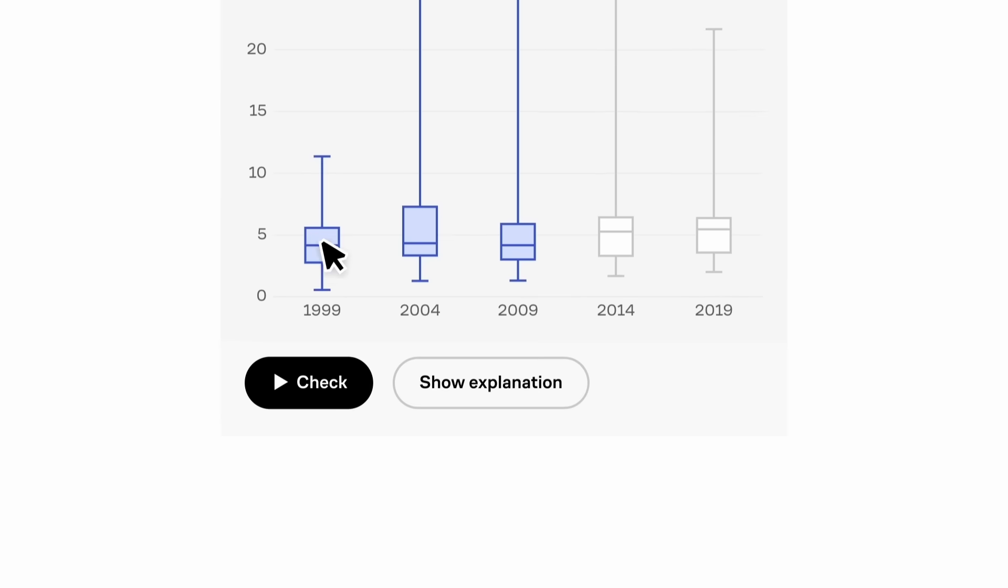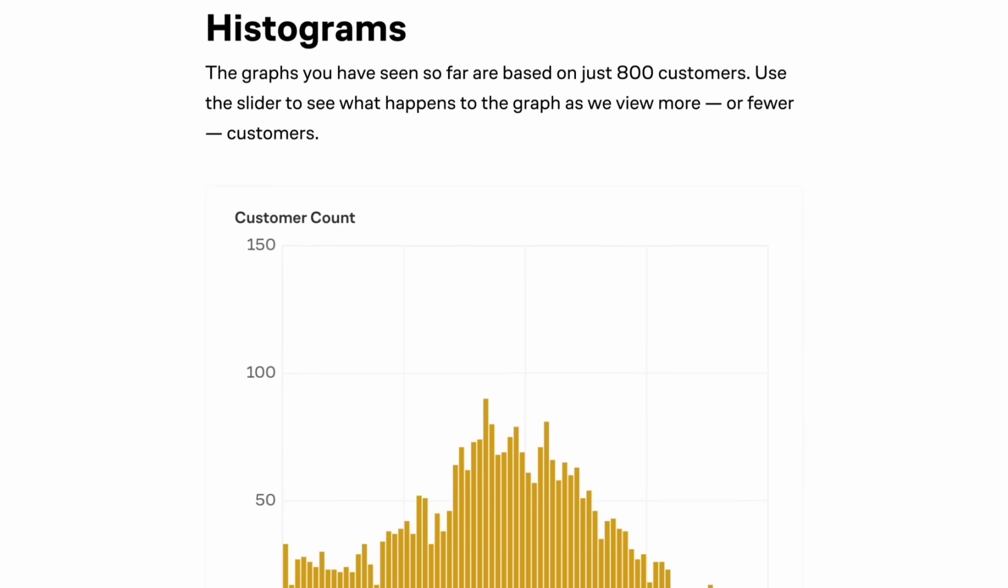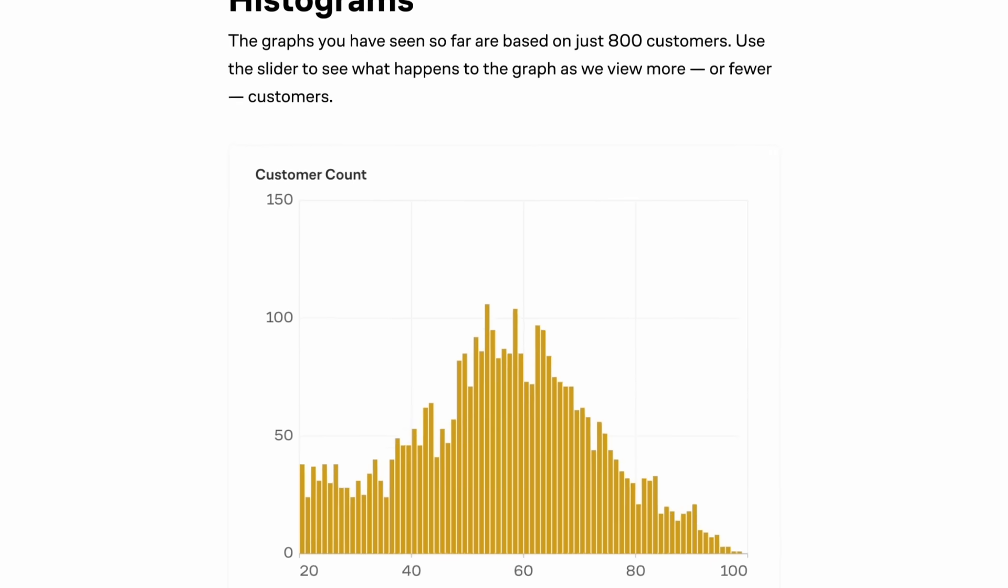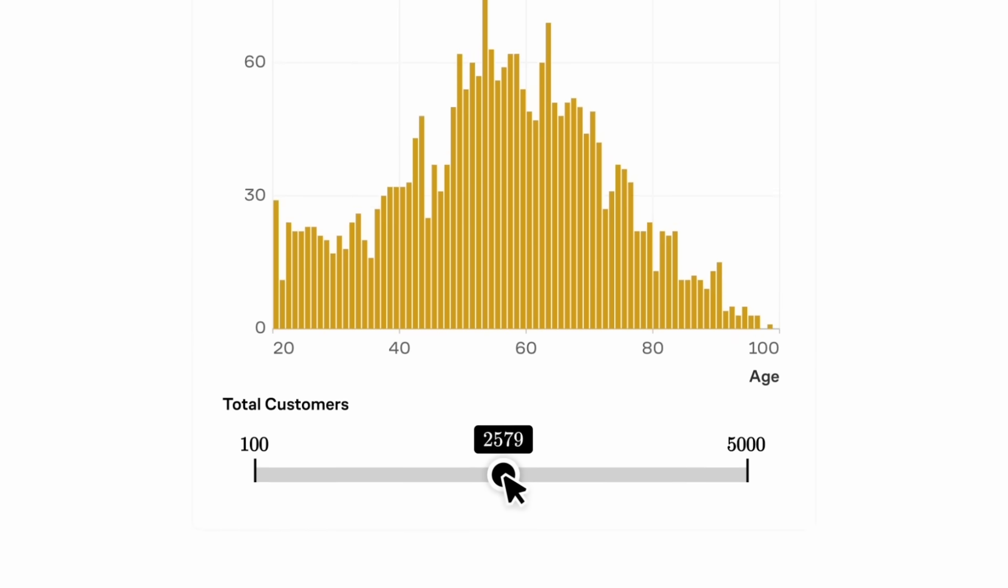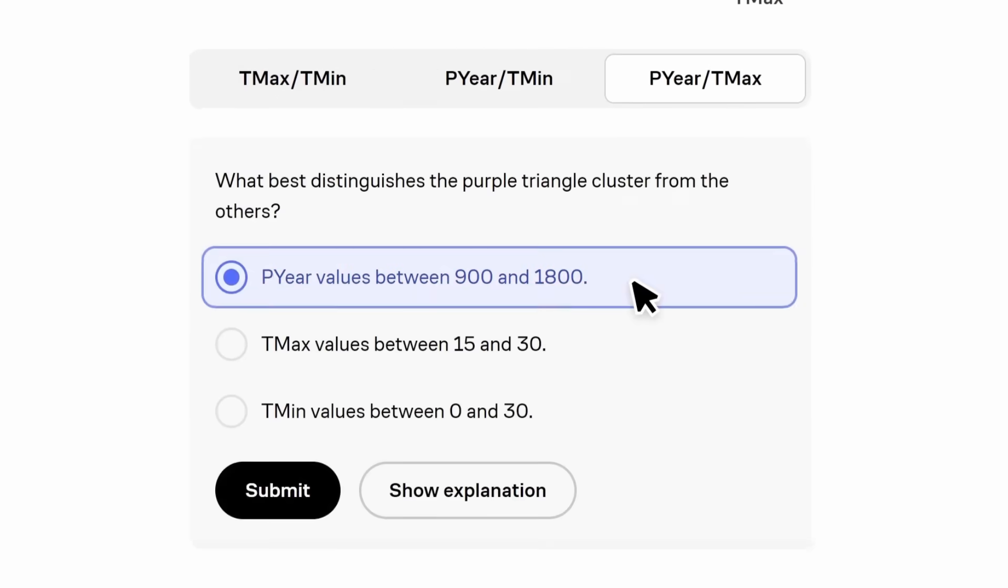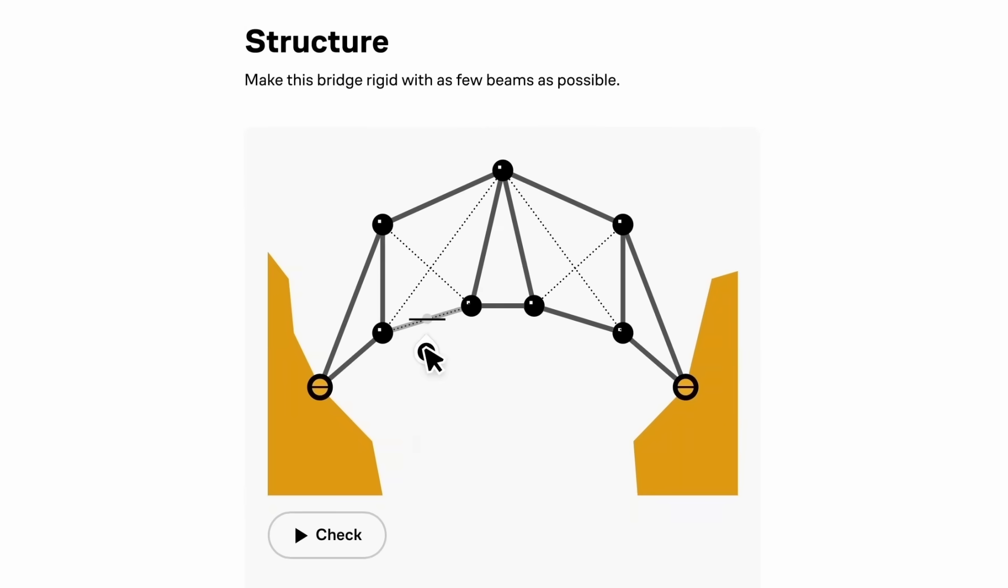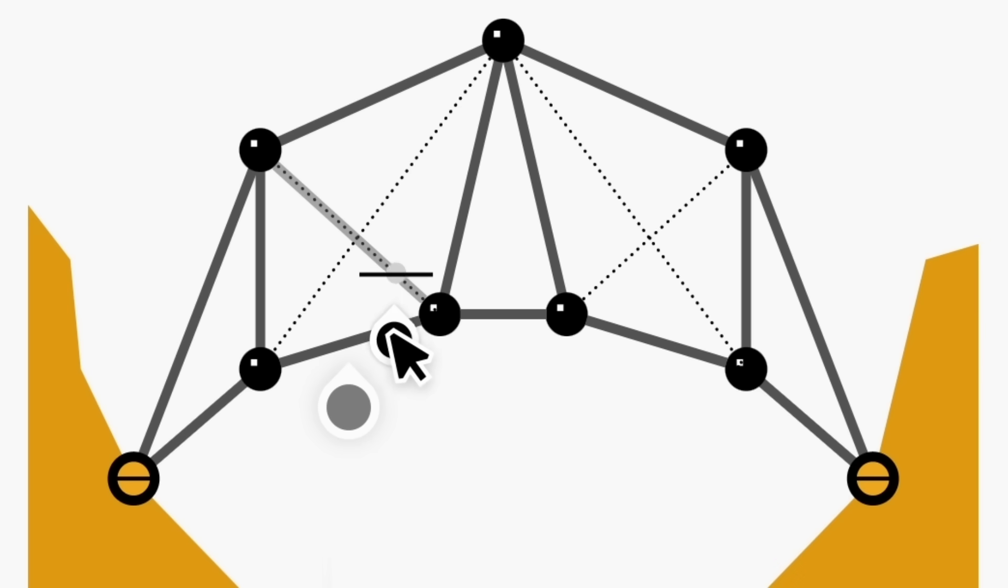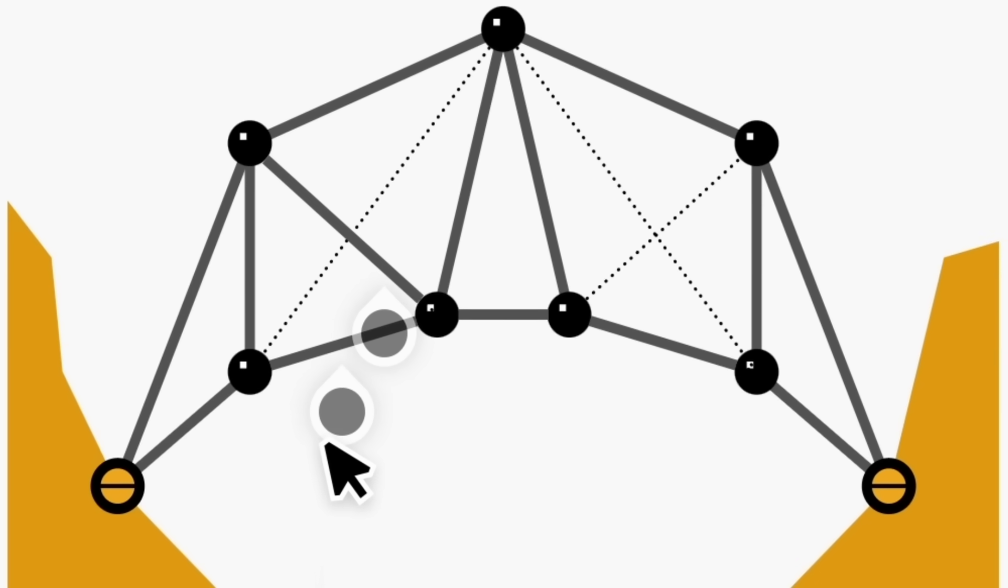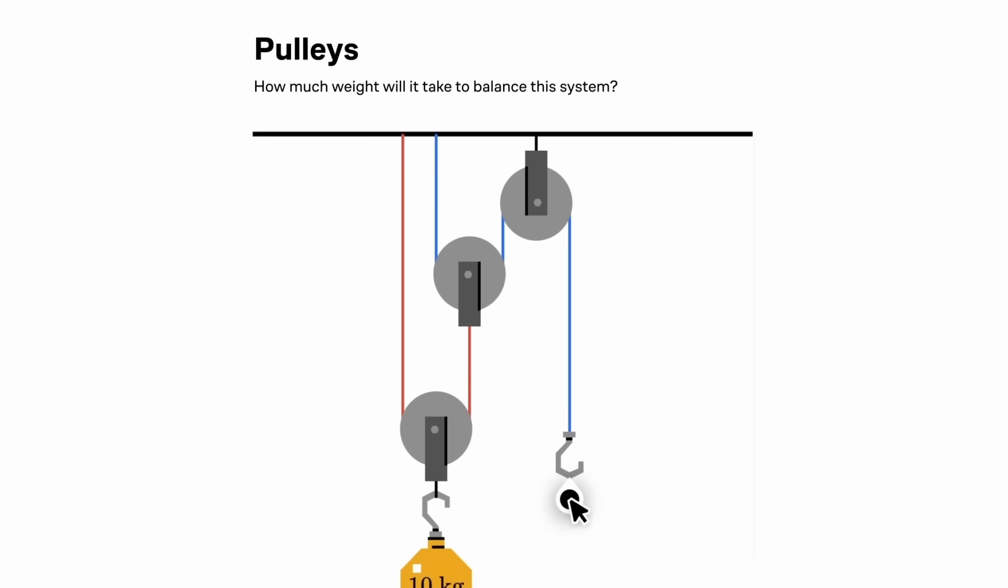All courses on Brilliant have interactive visualizations and come with follow-up questions. What you see here is from their data science courses, which they just released. They all use real-world examples like what it means to go viral on X. Brilliant covers a large variety of topics in science, computer science and maths, from general scientific thinking to dedicated courses on algebra or large language models. Just what I'm interested in. And they're adding new courses each month.